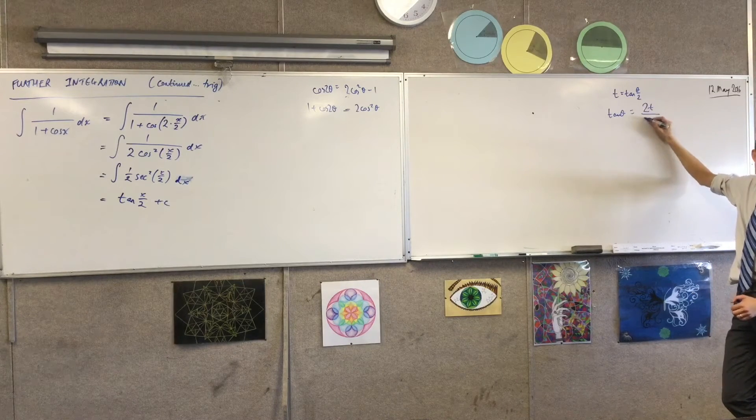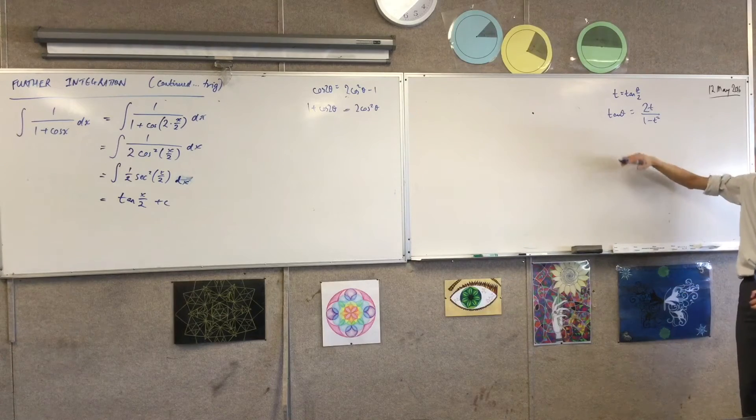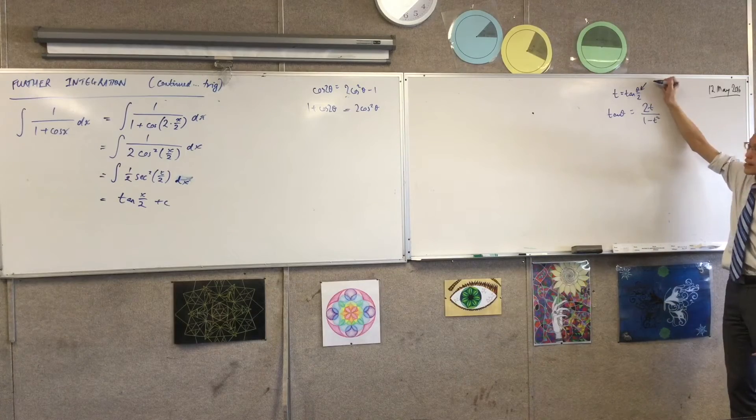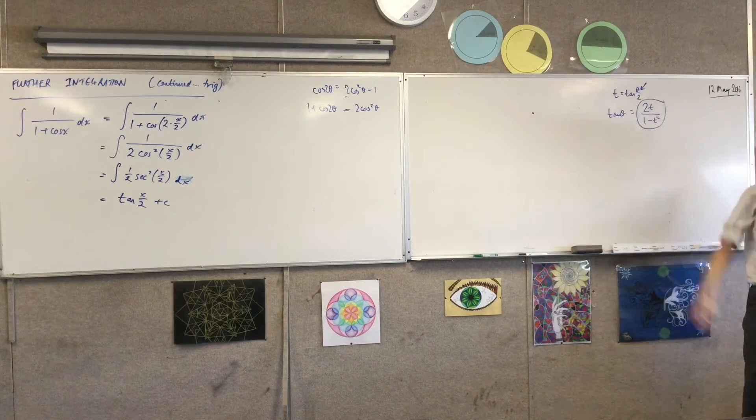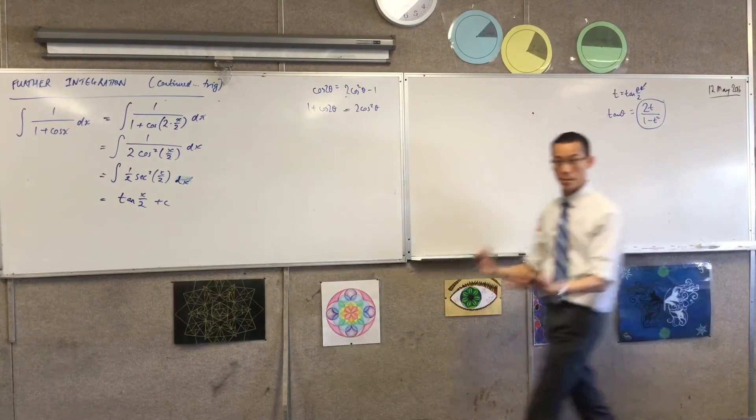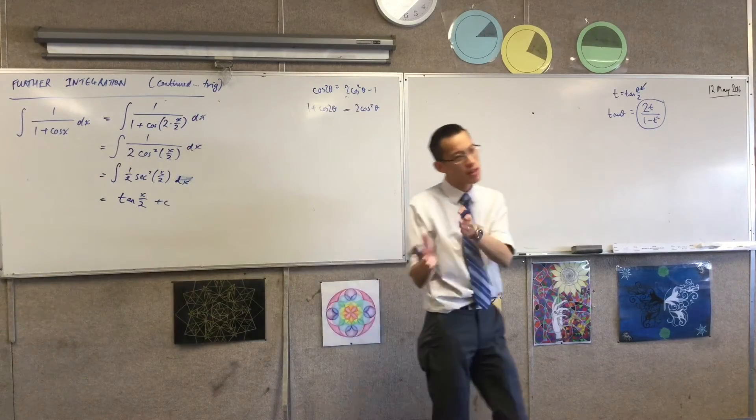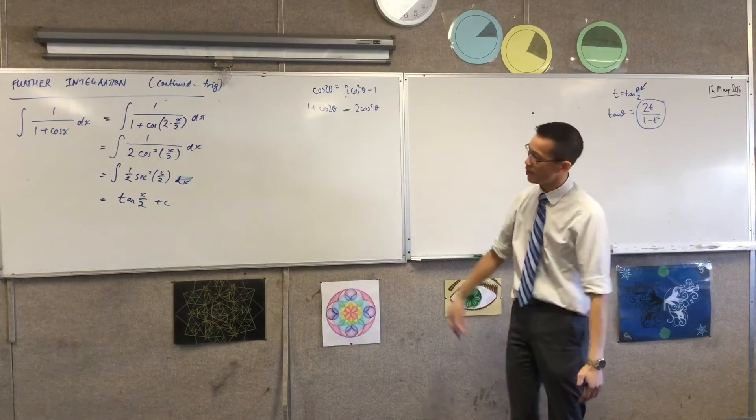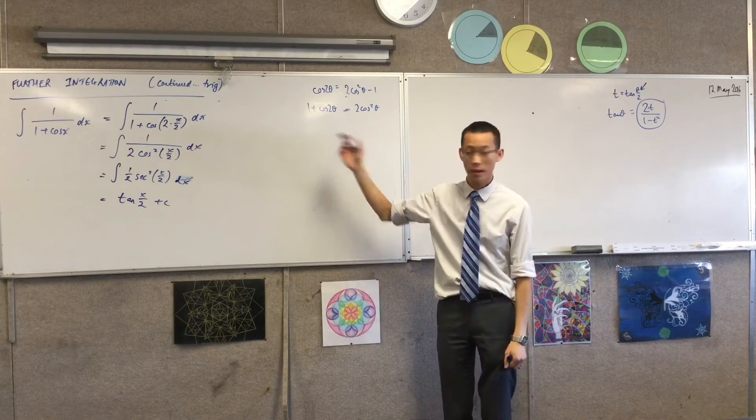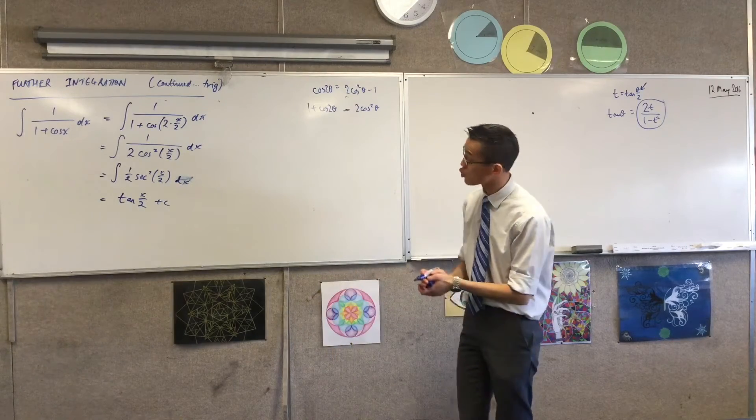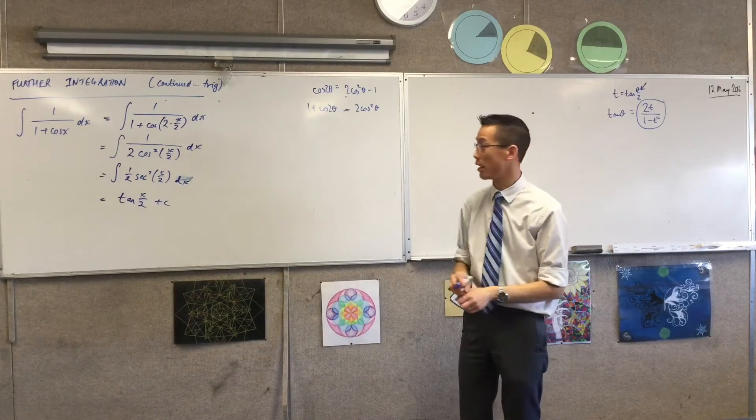2t on 1 minus t squared, right? And then we go sine, we go cosine. Now all of these, like you see how using this comes out of using the double angle formula? So every double angle formula is a half angle formula in disguise. We're just not used to using that in a 2 unit or extension 1 context, because it's an extension 2 skill.